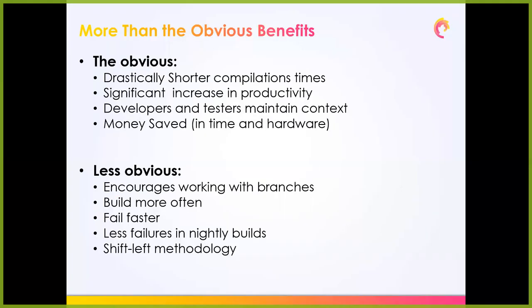When code or a test fails when being executed on the developer machine, fixing that costs much less than fixing an error that occurs in CI. When an error occurs in CI, the release manager needs to look at it first, see if there's a problem in the environment, then open a ticket and get it back to R&D, and then someone needs to inspect it again. When the error is on the developer workstation, the ability to address it even before the commit is much faster and reduces a lot of work for different people in the organization.